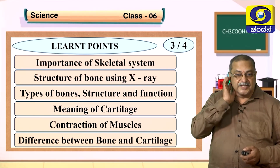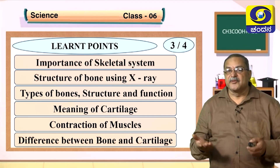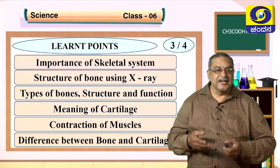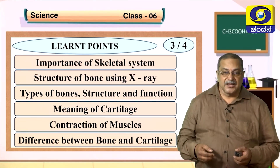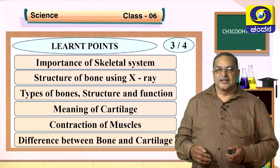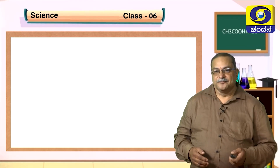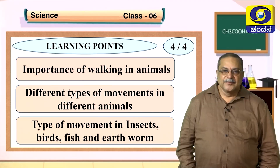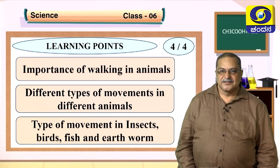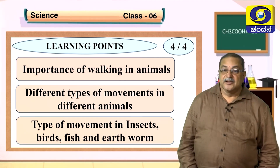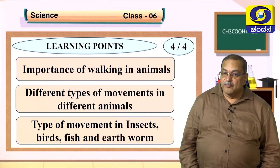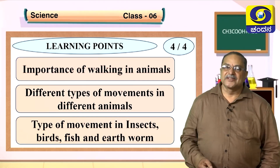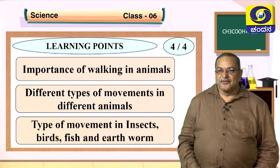We also learned the meaning of cartilage, contraction of muscles, and the difference between bone and cartilage. Now we are going to the fourth session, where we will learn about movements in different animals — types of movement in insects, birds, fish, and earthworms. Very interesting topics — let us see what we are going to learn.